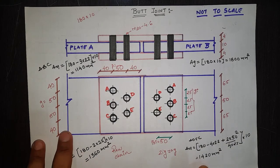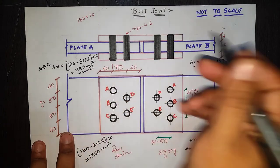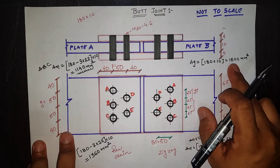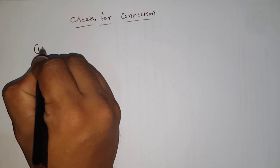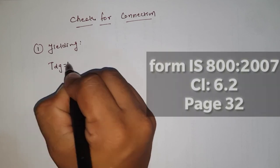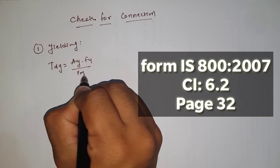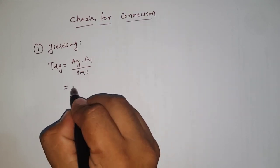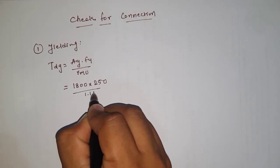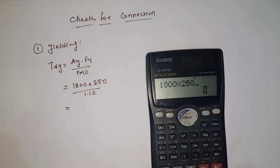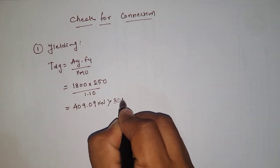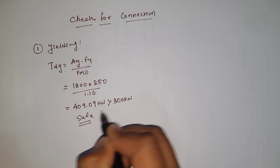Out of the three values, the minimum is 1140 mm², so An = 1140 mm² and Ag = 1800 mm². First check is yielding: Tdg = Ag · fy / γm0 = 1800 × 250 / 1.10 = 409.09 kN, which is much greater than the design load of 300 kN. Therefore, the plate is safe in yielding.